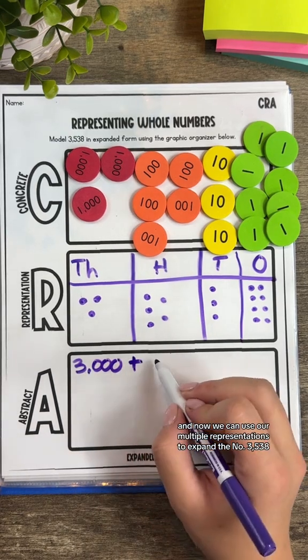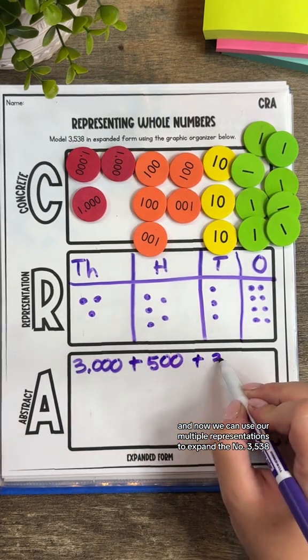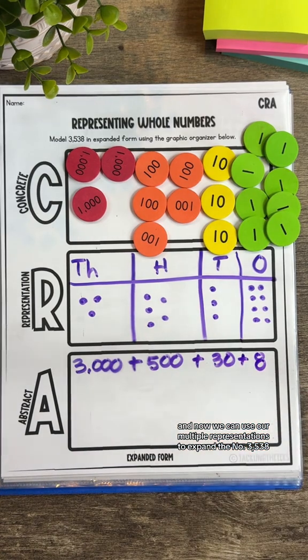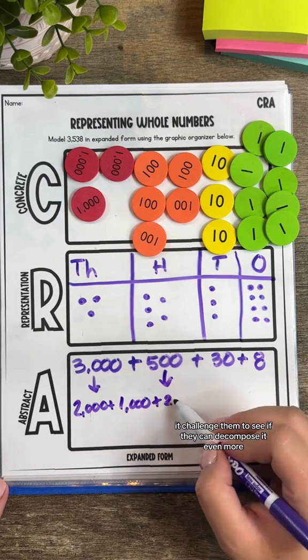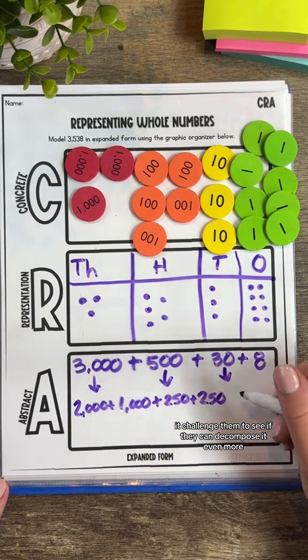And now we can use our multiple representations to expand the number 3,538. Once your students are comfortable with writing it in the standard way, challenge them to see if they can decompose it even more.